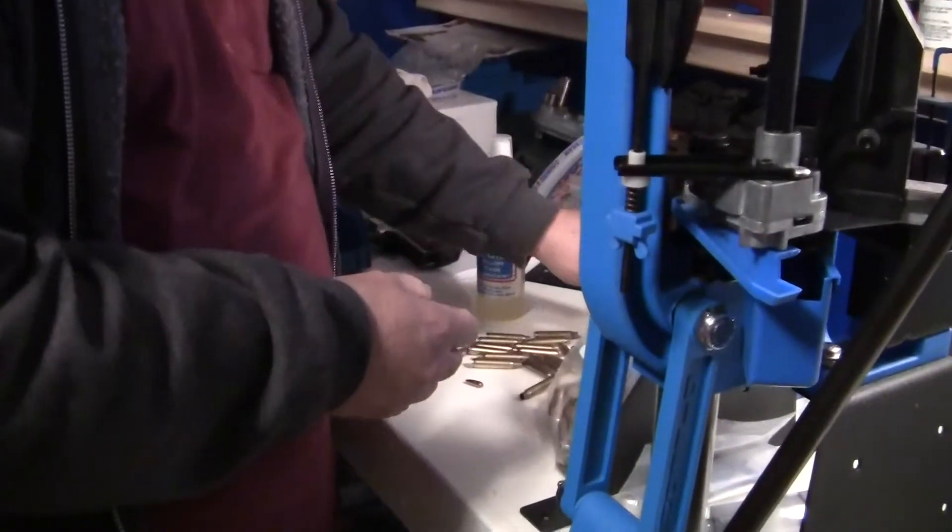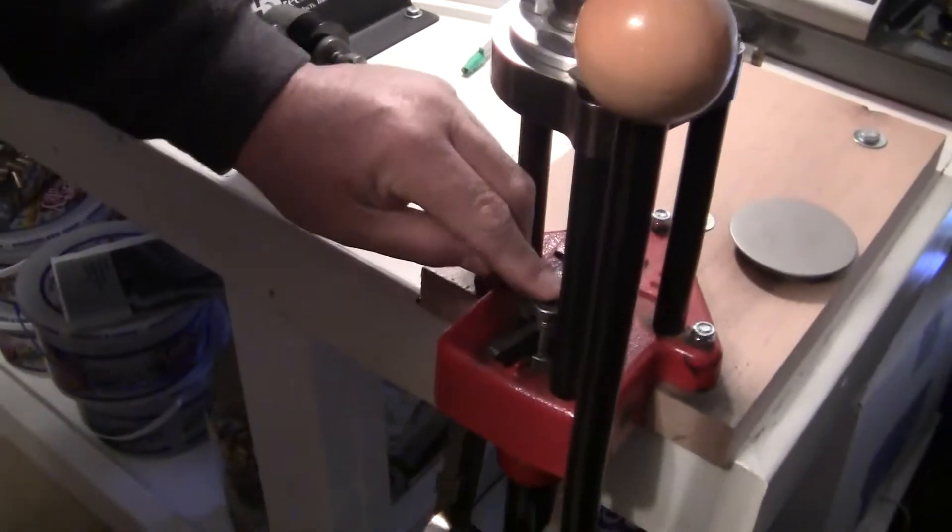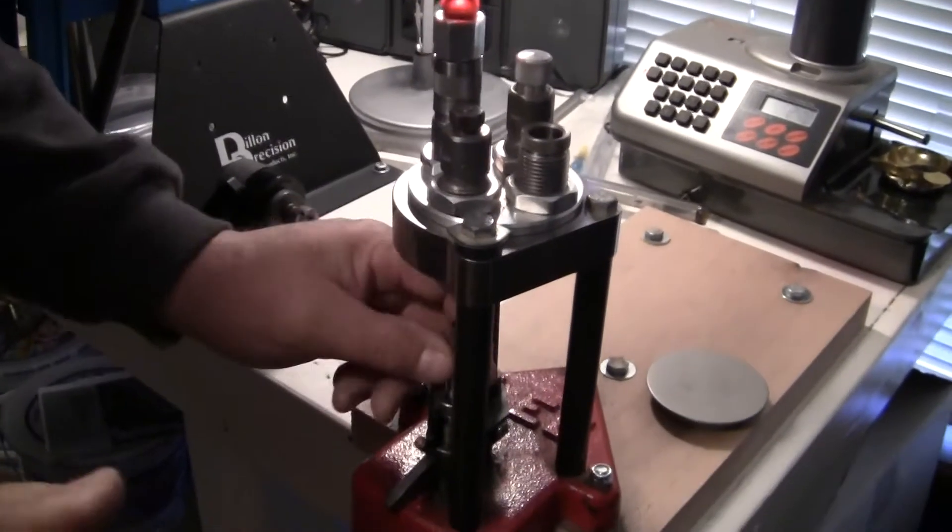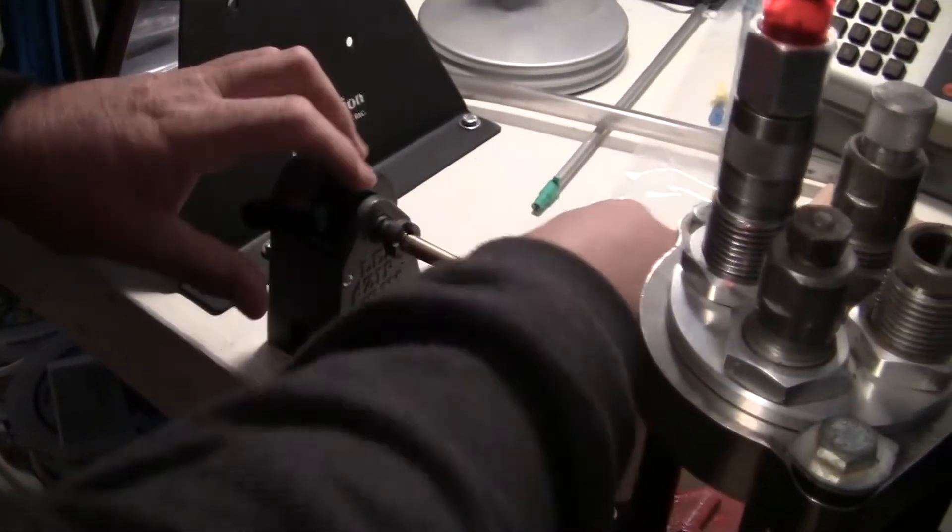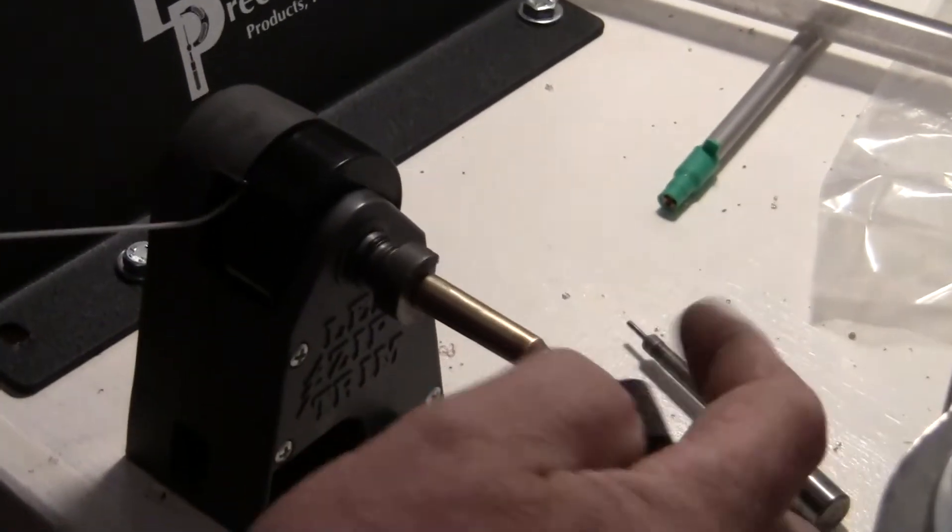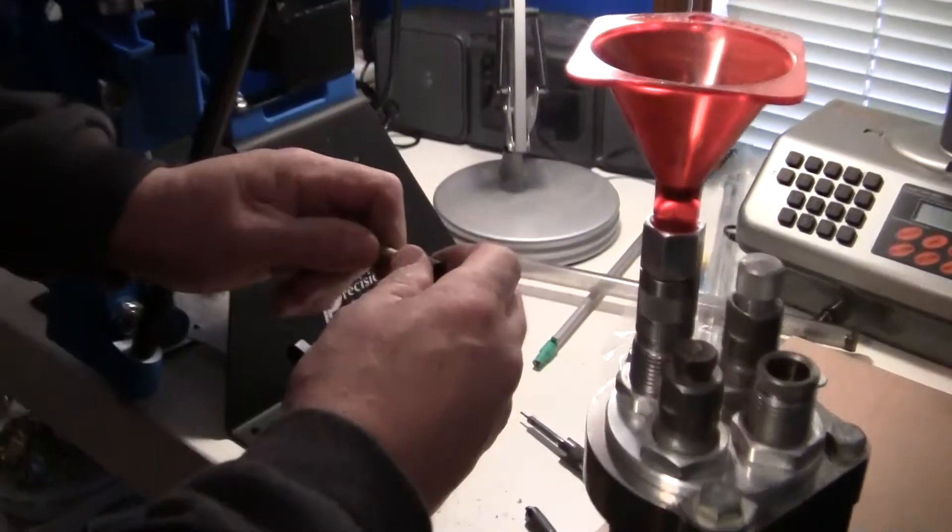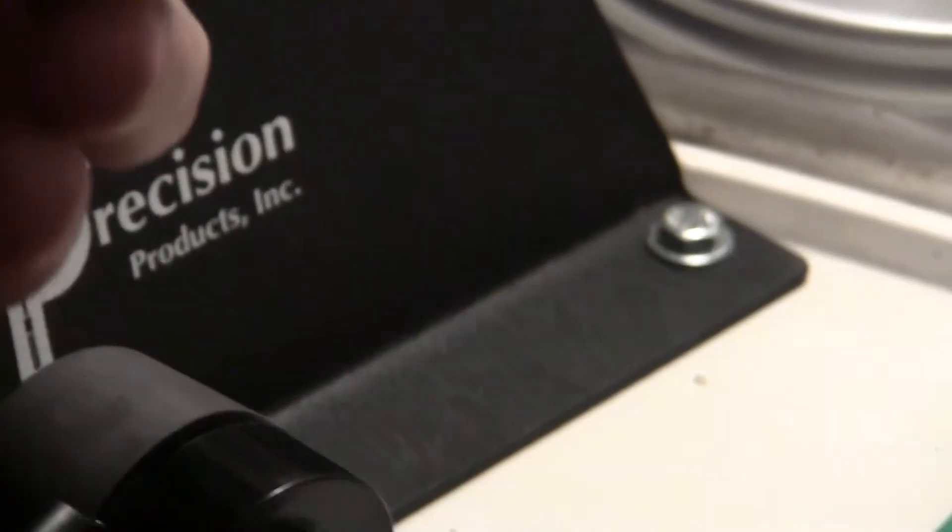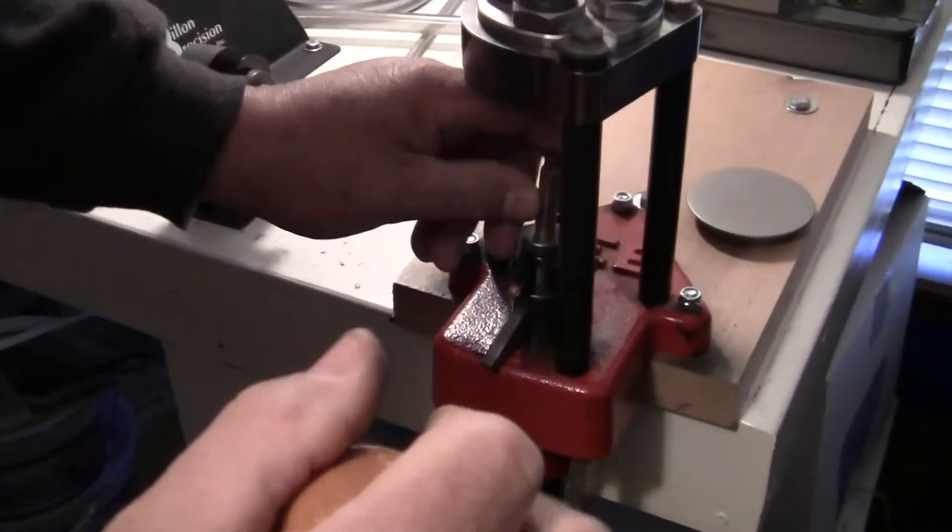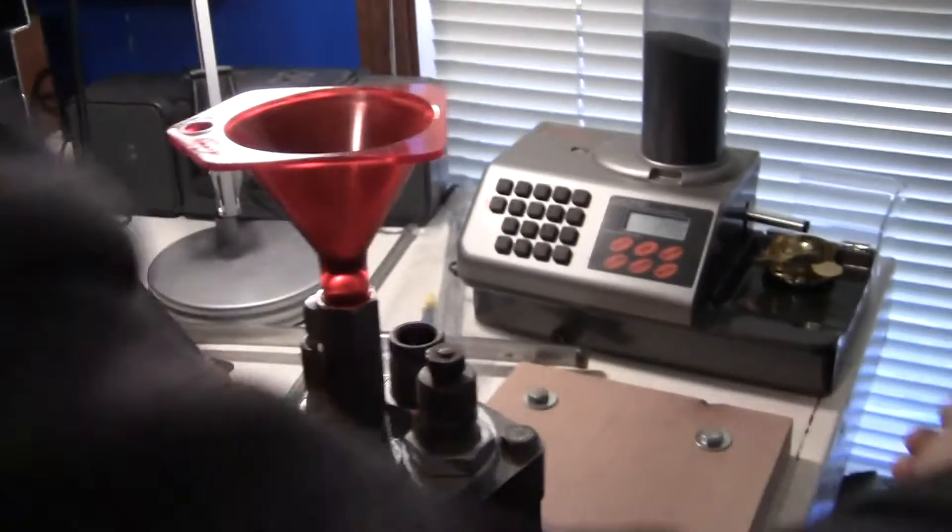And we'll do one more. Primer, empty case. Inside out, as a factory crimp. I'm gonna crimp primer, clean that out, clean primer pocket, put it back on there. On the downstroke, prime it. Bring it up into the rifle charge die, get my measured charge. Take a bullet.